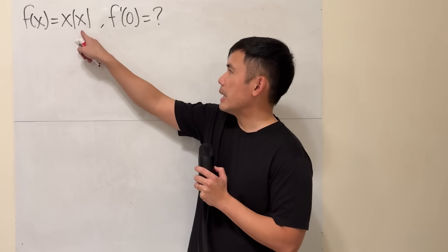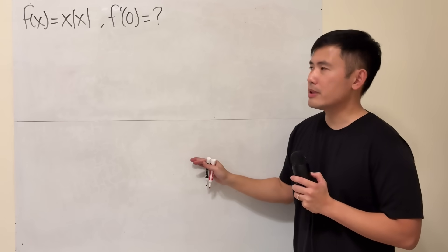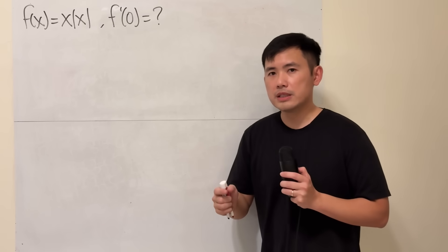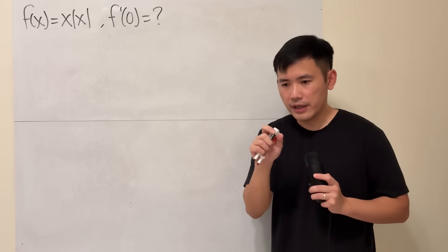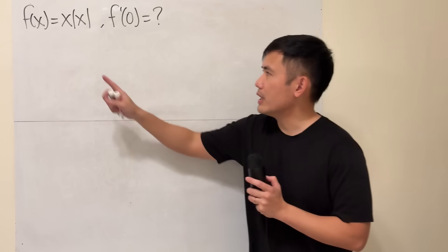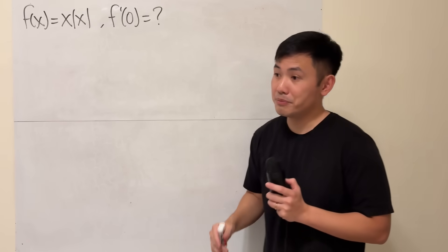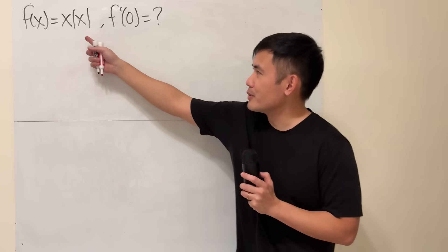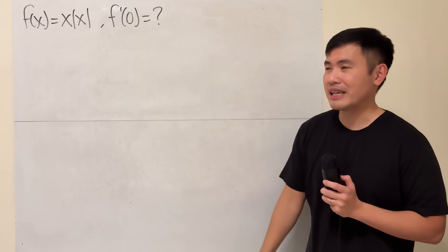The function is x times absolute value of x. And of course the trouble number is when x is equal to 0, because we know if you just have absolute value of x, that function is undefined as 0. But here we have x times absolute value of x. So is this x going to make a bit of difference? Let's have a look.